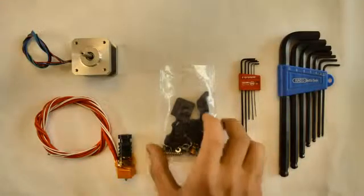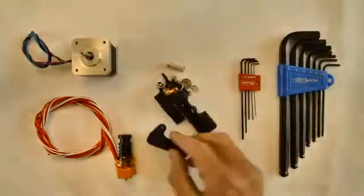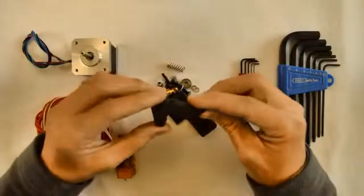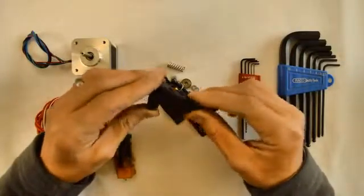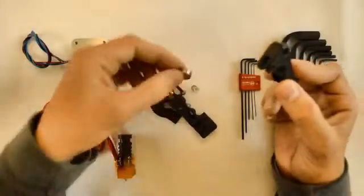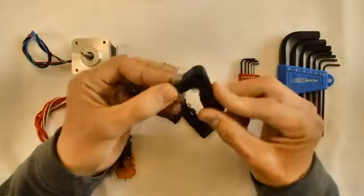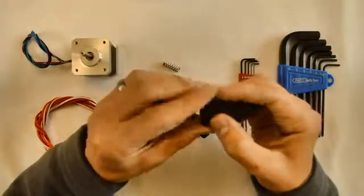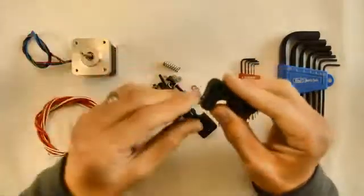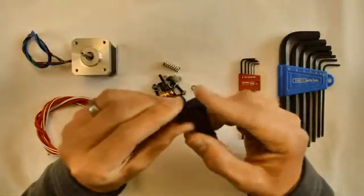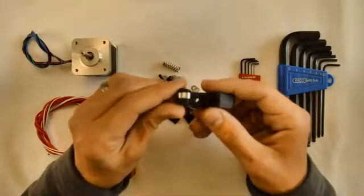The first step is to prepare the components. We will take the component that looks like this. This is the lever of the extruder. And we will assemble the bearing. This is a 624 bearing. We will assemble it to the lever by inserting the bearing into the slot provided.